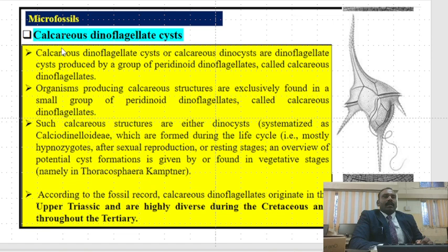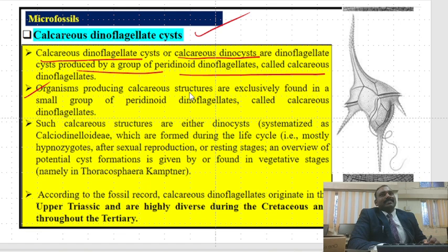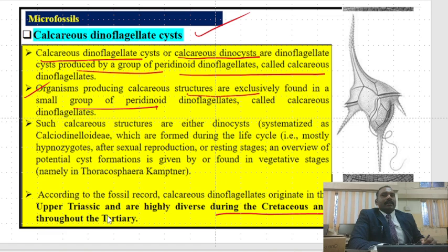Calcareous dinoflagellate cysts are produced by a group of peridinoid dinoflagellates called calcareous dinoflagellates. Organisms producing calcareous structures are found exclusively in a small group of peridinoid dinoflagellates, and these remained through the Cretaceous and throughout the Tertiary period.